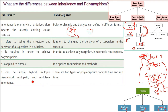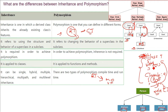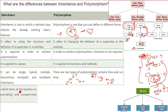Polymorphism has two types: runtime and compile time. Runtime is also called late binding; compile time is also called early binding. Compile-time polymorphism can be implemented using function overloading or operator overloading. Runtime polymorphism is implemented using method overriding.